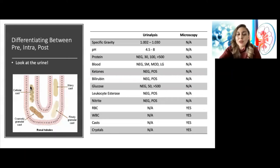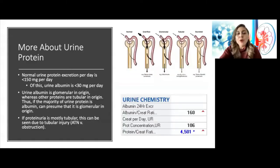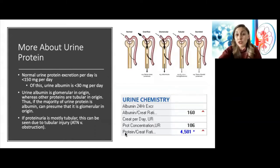A cellular cast with red blood cells raises the suspicion for glomerulonephritis. A white blood cell cast raises suspicion for interstitial nephritis. As you can see, we get a lot of information from the urine, so it's very important to send urinalysis with microscopy when you see a patient with AKI.